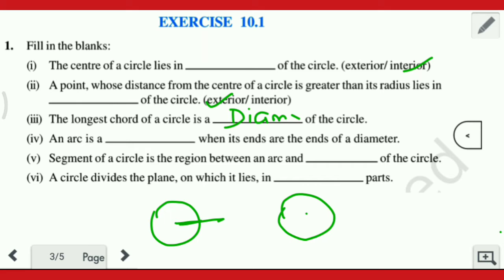Now the next question: an arc is a dash when it ends at the end of the diameter. Kya raha kiya arc jo hai — is a dash, kya hoga. Jab arc ends at the end of the diameter, to maan lo aapne aisi banaya — arc yahan par end ho gayi, aur jahan end ho rahi hai wahan diameter hai. To yahan ka figure kaunsa hai? Semicircle. An arc is a semicircle.